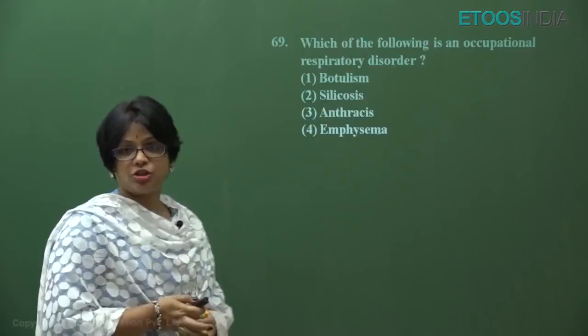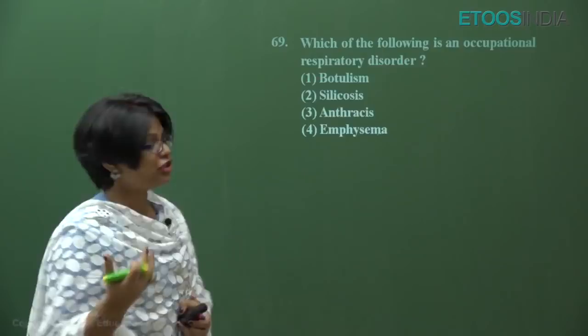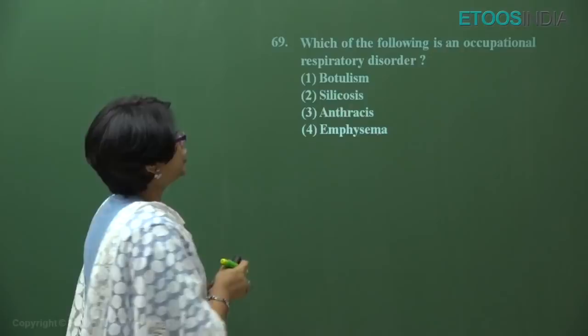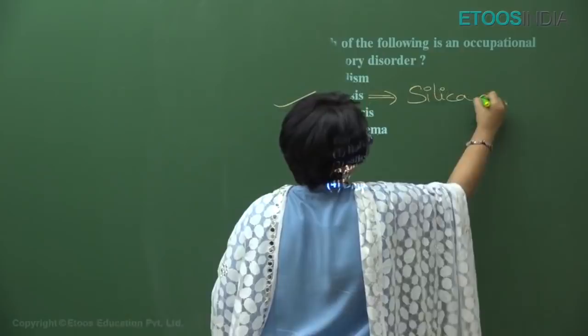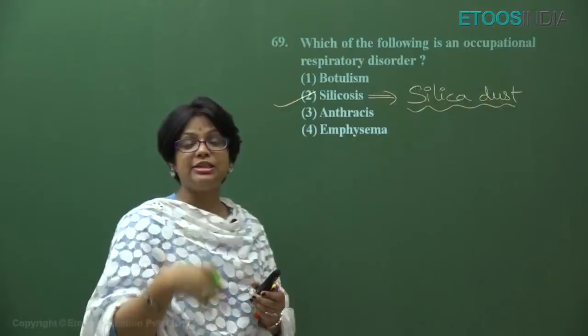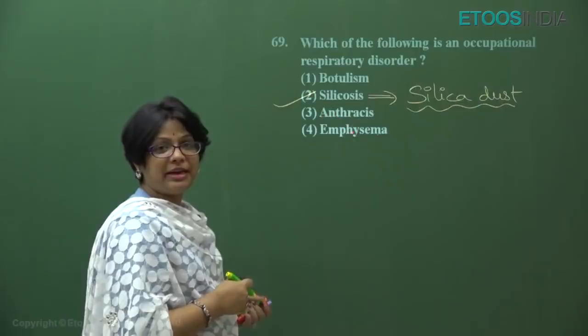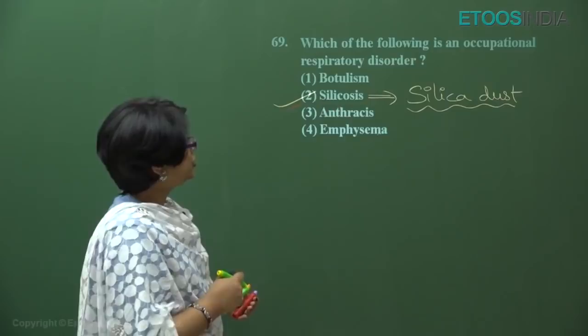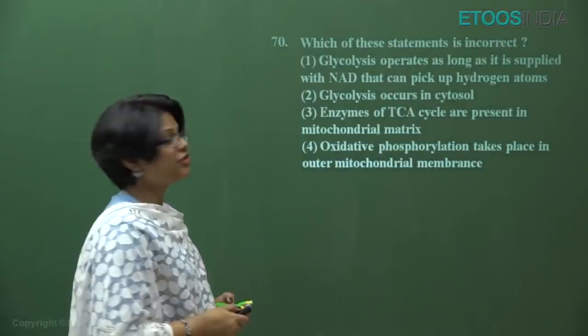Question number 69: which is an occupational respiratory disorder? Occupational disorders are those affecting lungs due to work environment. Botulism is caused by Clostridium botulinum and is not occupation-related. Silicosis is caused by prolonged inhalation of silica dust in glass or marble industries, leading to fibrosis of the lungs — this is an occupational disorder. Anthrax is caused by Bacillus anthracis; emphysema is due to chronic cigarette smoking. Answer is directly option two — silicosis.